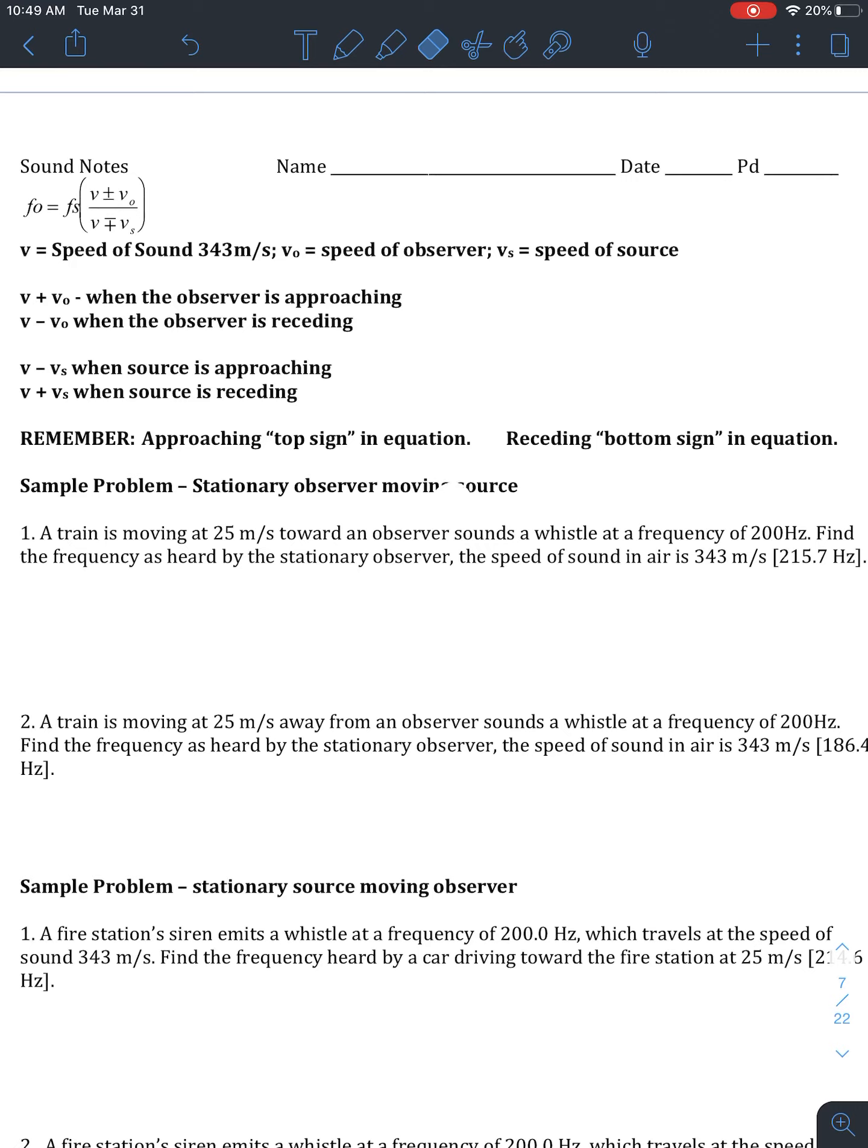So if we have our train, it's a great train, moving this way at 25 meters per second. And we have an observer probably waiting for the train who is stationary. And if you're stationary, your velocity is going to be zero. And we have our speed of sound and our frequency of that sound.